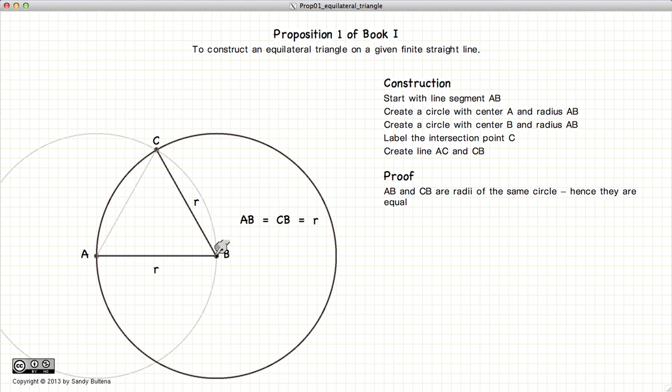So if we look at the circle with B as the center, CB and AB are radii of the same circle and hence are equal in length.